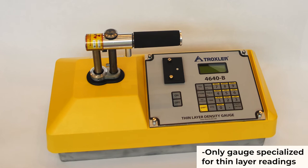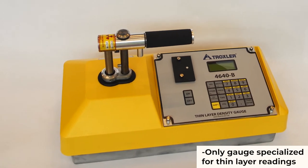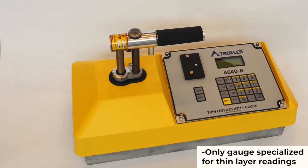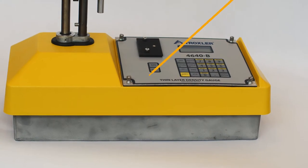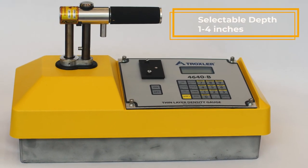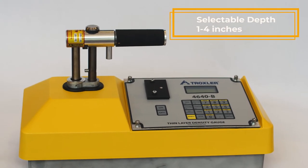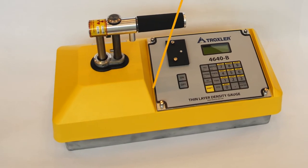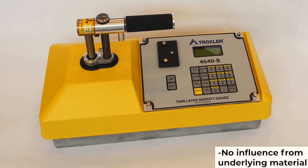It is the only nuclear gauge in the world specialized for thin layer readings. Designed to measure the density of thin asphalt and concrete layers from 1 to 4 inches as selected, the Troxler Model 4640B Thin Layer Density Gauge accurately measures the overlay density without influence from underlying material.